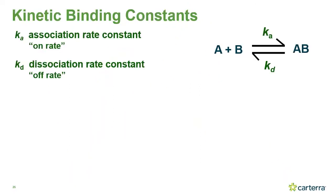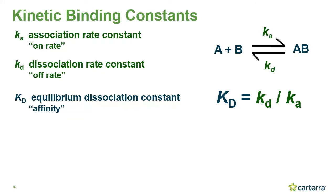What do we expect from a real-time kinetics analysis, and what is the significance of these rate constants? For a simple one-to-one interaction where A plus B forms complex AB reversibly, the association rate constant ka — the on rate — drives complex formation, and the dissociation rate constant kd — the off rate — drives dissociation. The equilibrium binding constant KD is calculated by dividing the dissociation rate constant by the association rate constant.